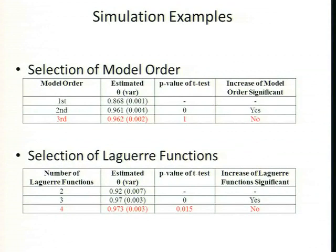As for how many expansion functions to use — this example uses three, and I'd assume not more than ten in most cases. It depends on the system and its dynamics. A rule of thumb: the more oscillatory the system, the more Laguerre functions you'll need. For slowly decaying systems without fast dynamics, a lower number should suffice. But you don't have to pick a number arbitrarily — you can actually test what's the best number and best model order.